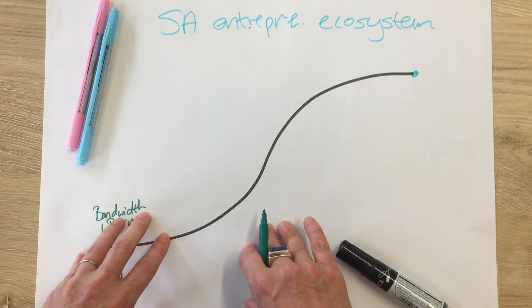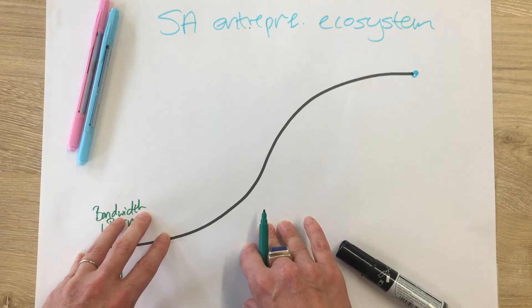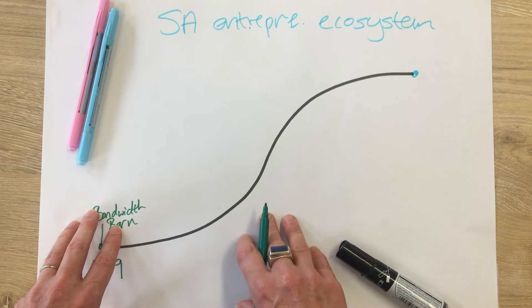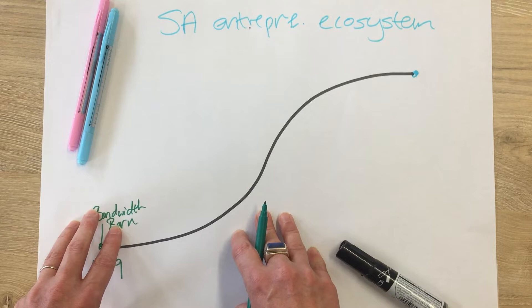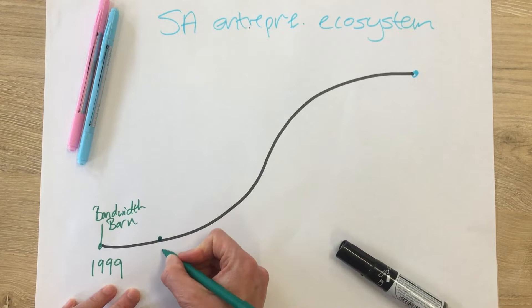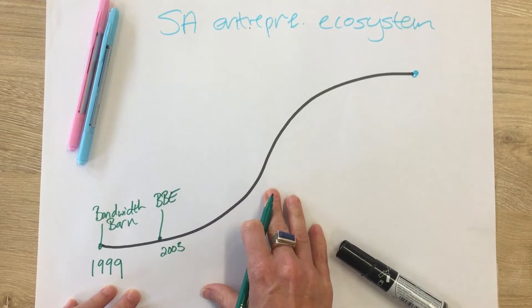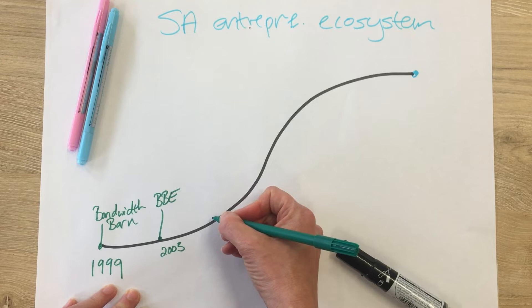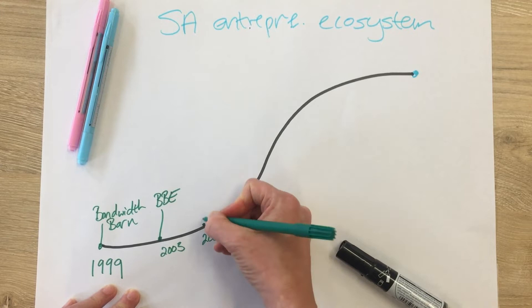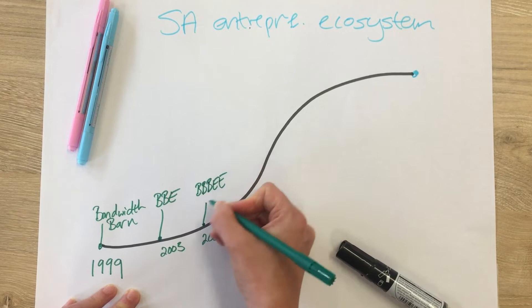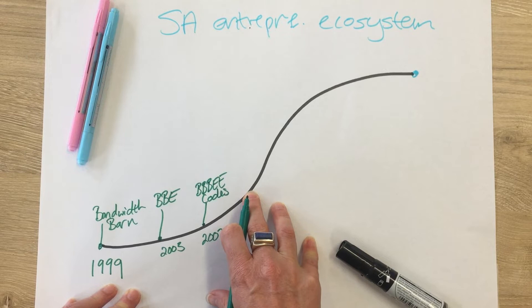A very important stimulator of small business activity in South Africa has been black economic empowerment, which sees larger businesses and governments incentivized to procure from black-owned businesses. The first legislation for BEE was passed in 2003, and then the broad-based BEE codes were published in 2007. As you can see, we're taking a trip through history, and these codes have been really important in getting corporates to procure from small businesses.